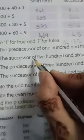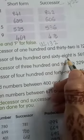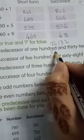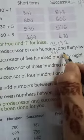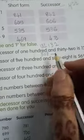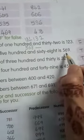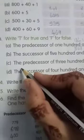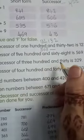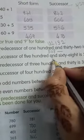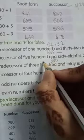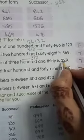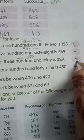The successor of 568 is 569. Successor is nothing but the after number, so the successor of 568 is 569, so it is True. The predecessor of 330 is 329, so it is also a True statement, write T for true.